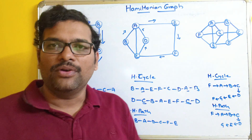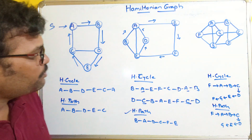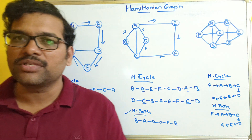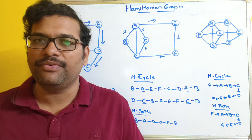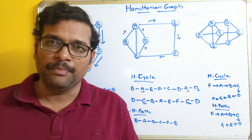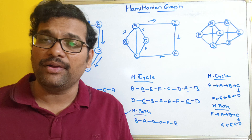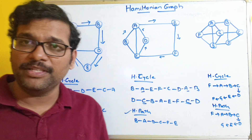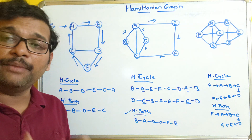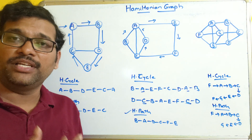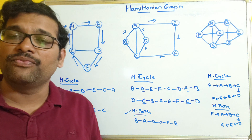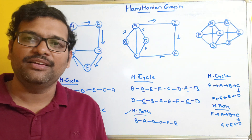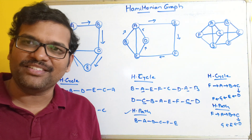We have discussed two things: Hamiltonian path and Hamiltonian circuits. If any graph contains at least one Hamiltonian cycle, we call it a Hamiltonian graph. Hope you understood this. If you have any queries or doubts, feel free to post in the comment section — I will try to clarify all your doubts. If you enjoyed my session, like and share it with your friends, and don't forget to subscribe to our channel. Thanks for watching.